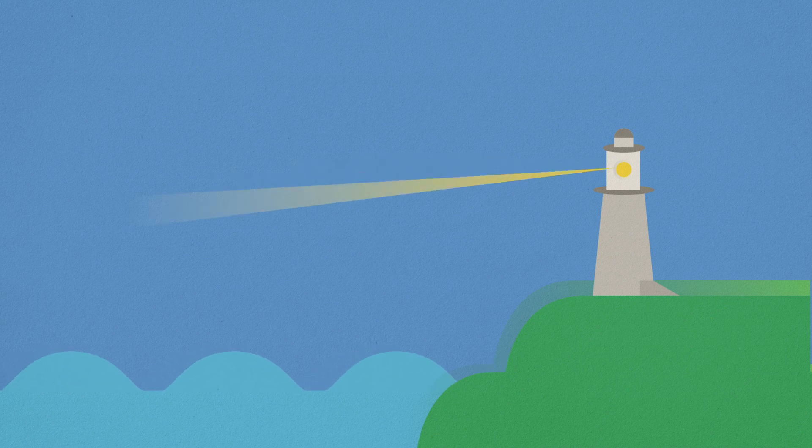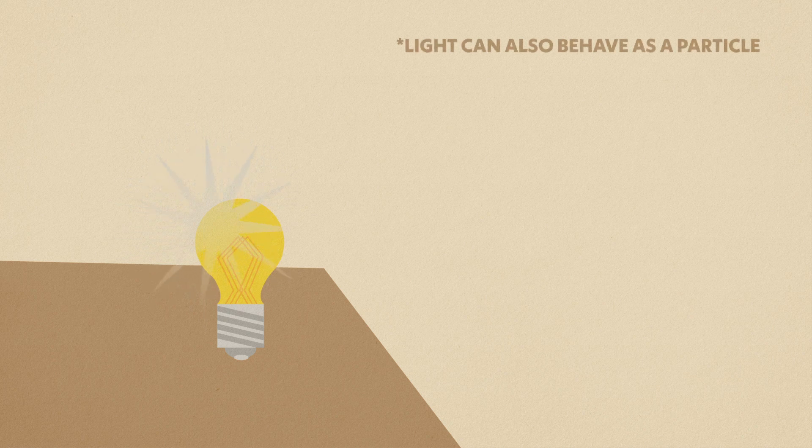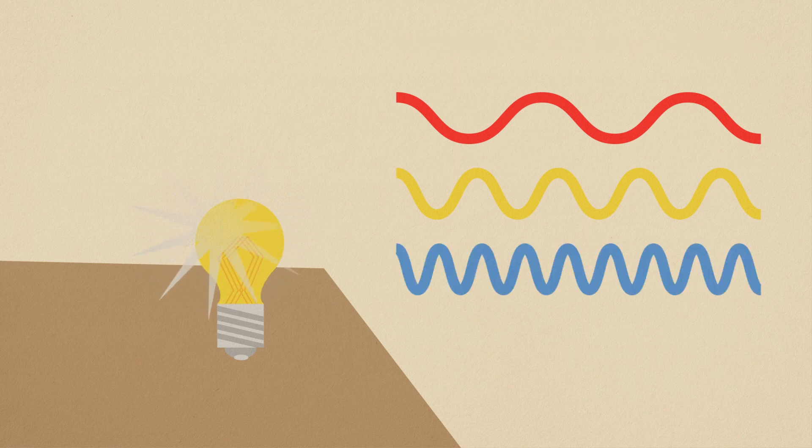Energy passes through the ocean in the form of waves, and just like that, light energy travels in waves too. Some light travels in short, choppy waves, and other light travels in long, lazy waves. Blue light waves are shorter than red light waves.